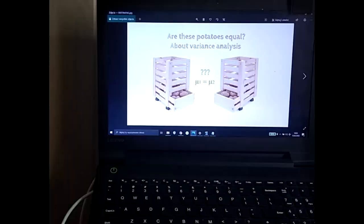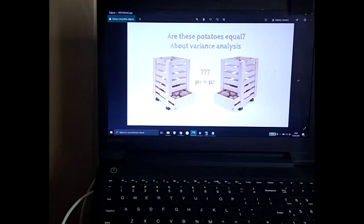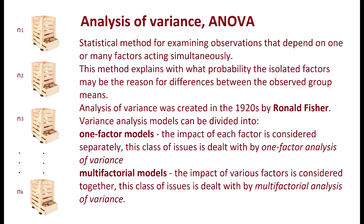I would like to speak about ANOVA, the analysis of variance. The motivation to this talk is very simple and very agricultural. Supposing we have two kinds of potatoes and we want to learn if the two kinds have the same mean weight or not. Theoretically it's a very simple question. The analysis of variance is a statistical method for examining observations that depend on one or many factors acting simultaneously. This method explains with what probability the isolated factors may be the reason for differences between the observed group means.